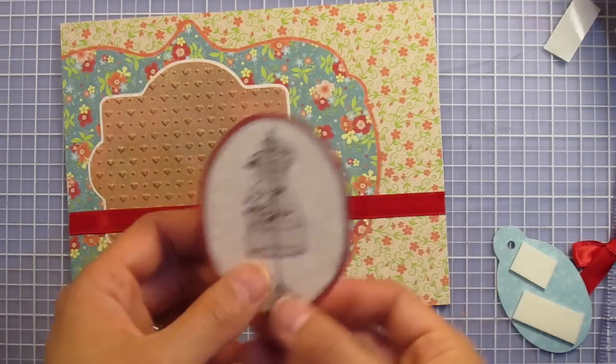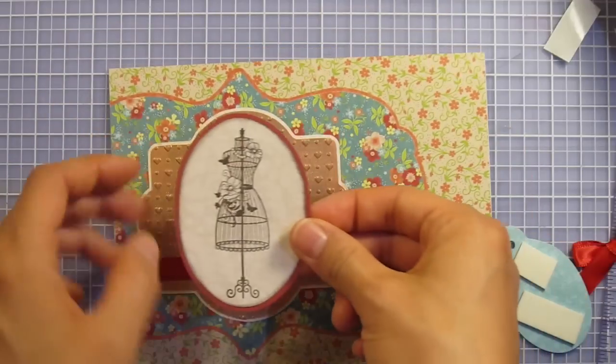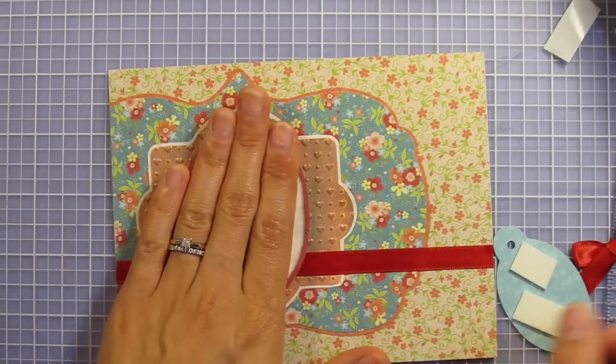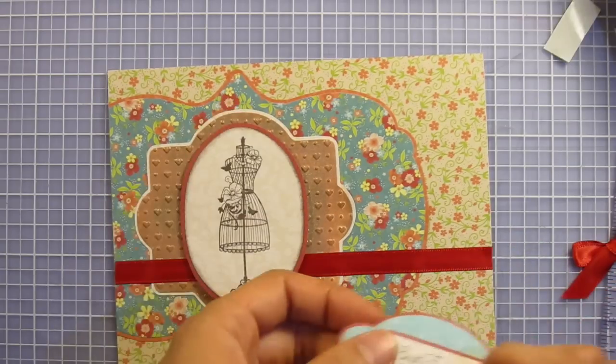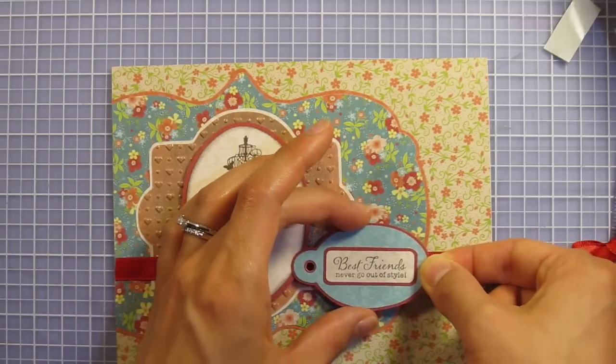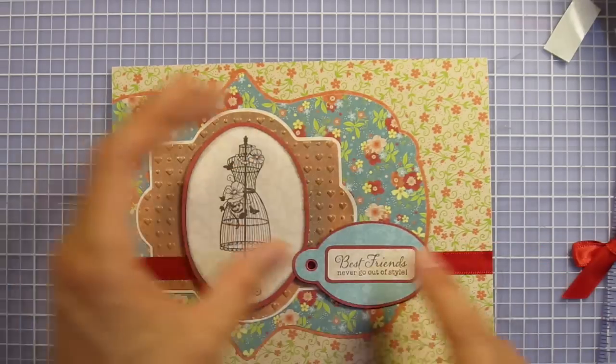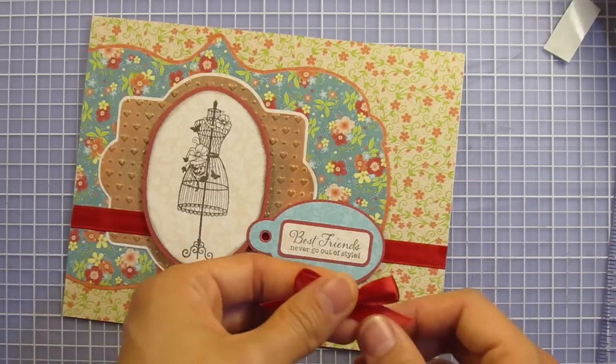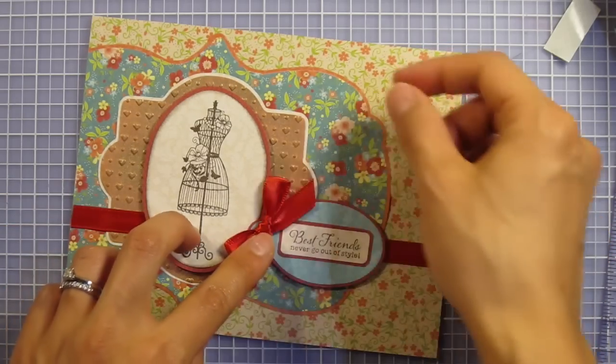There's my ribbon. I've got foam tape on the back of my other pieces. I'm going to center that within the oval here. For my tag, it's going to go right about here. I've also made this little bow and that's going to go right there.